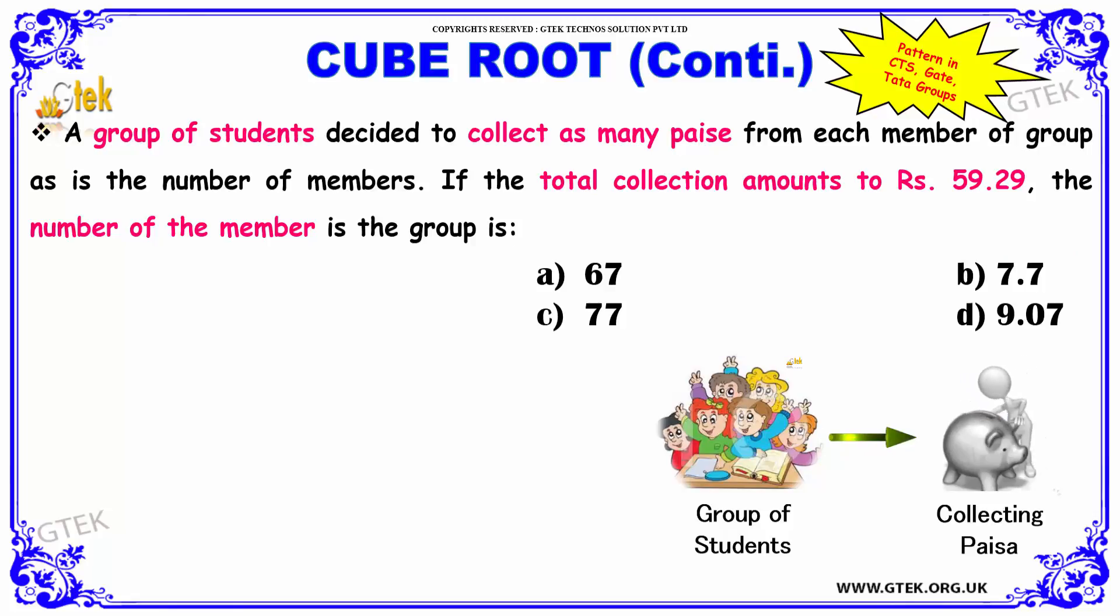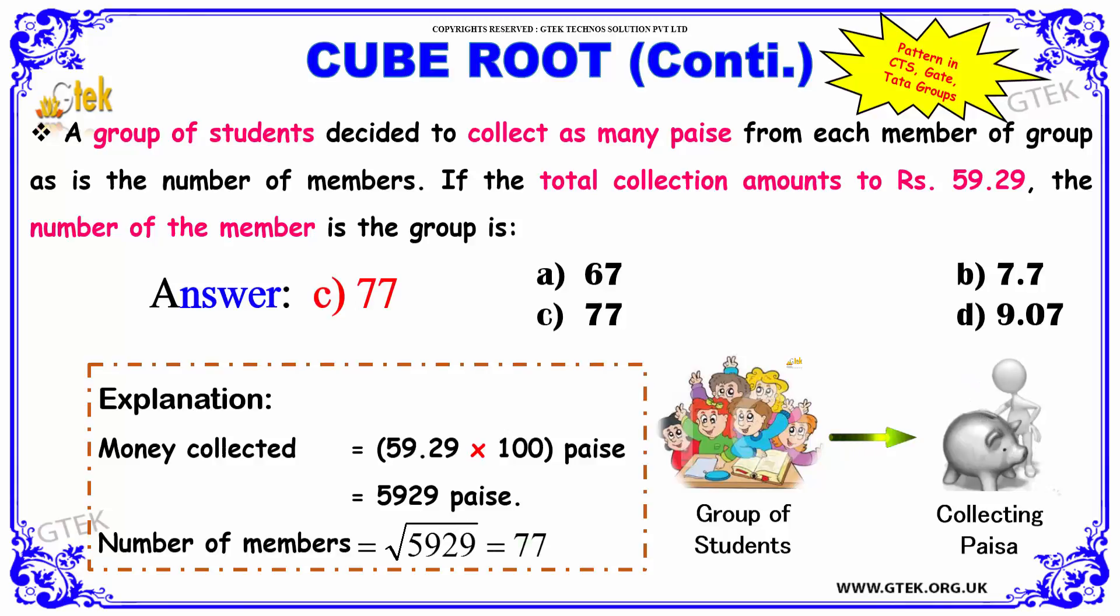Let us see how to solve this. It is given that the money collected will be equal to the number of members in paise. The money collected was Rs 59 and 29 paise.